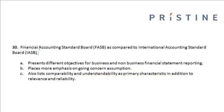Let us look at this problem. The Financial Accounting Standard Board, as compared to the International Accounting Standard Board, presents different objectives for business and non-business financial statement reporting, places more emphasis on going concern assumption, and also lists comparability and understandability as primary characteristics in addition to relevance and reliability.